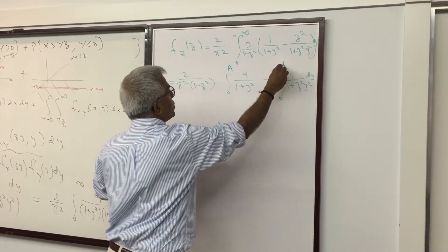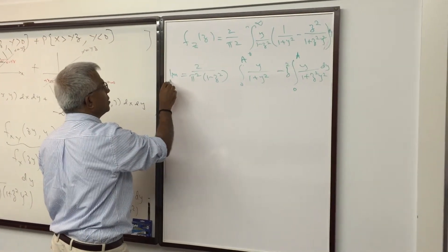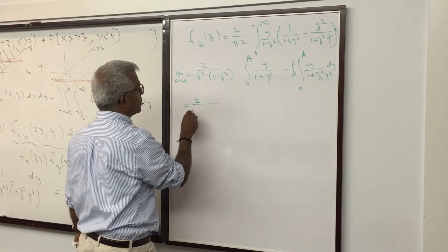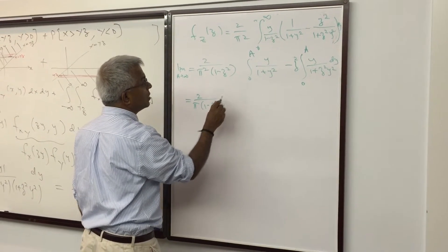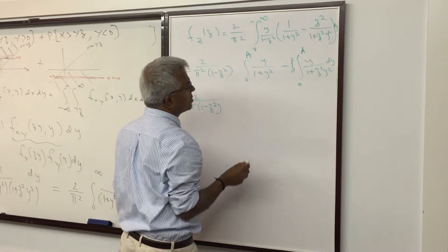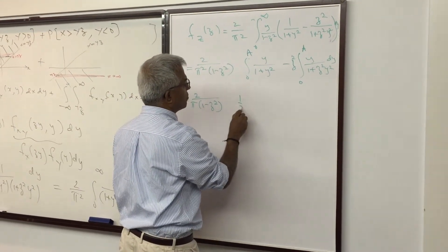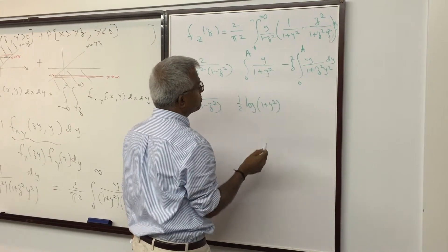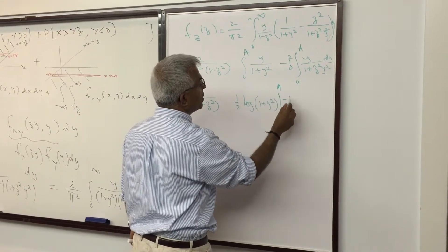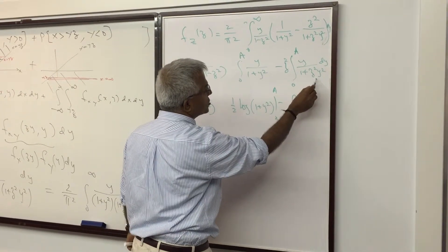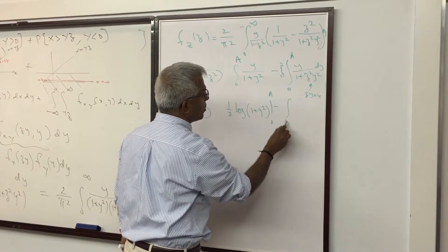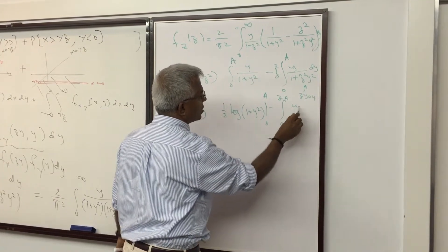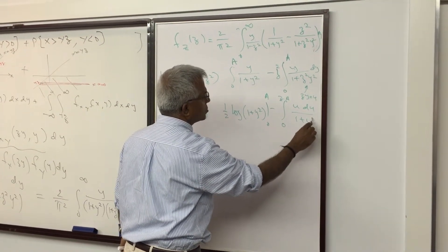We replace the upper limit of integration with a finite constant A and later take A → ∞. The first integral evaluates to (1/2) log(1 + Y²) from 0 to A. For the second integral, we substitute u = zY, so the upper limit becomes zA, and it becomes (1/z) · arctan-related form — specifically du/(1 + u²), with a factor of 1/z from the substitution.